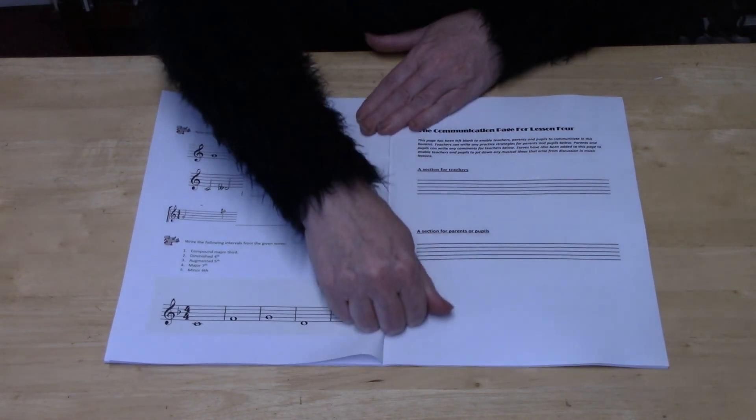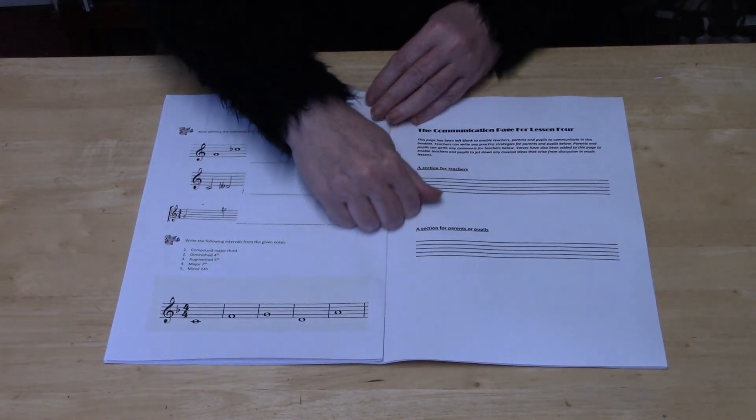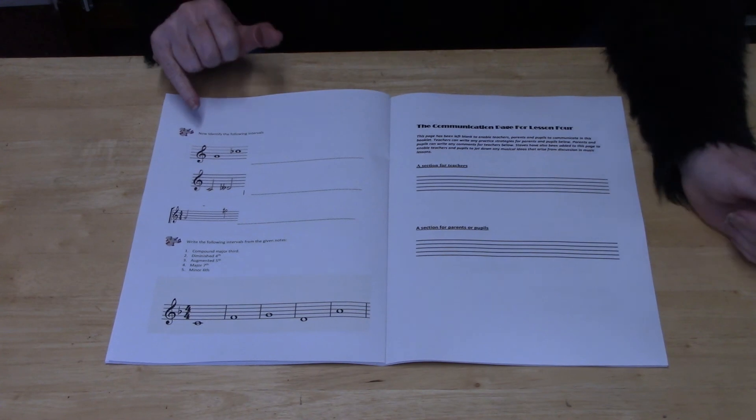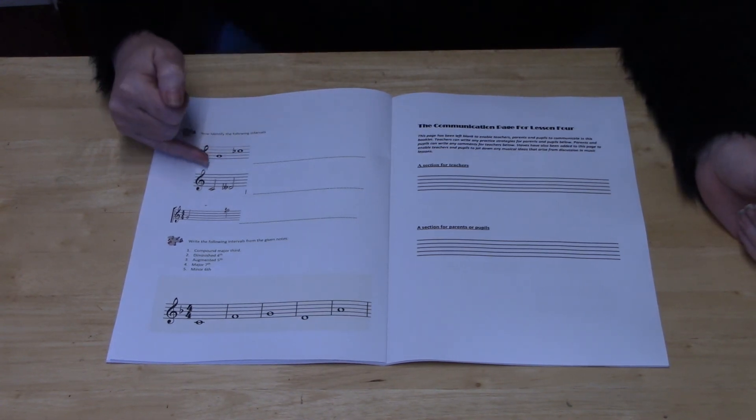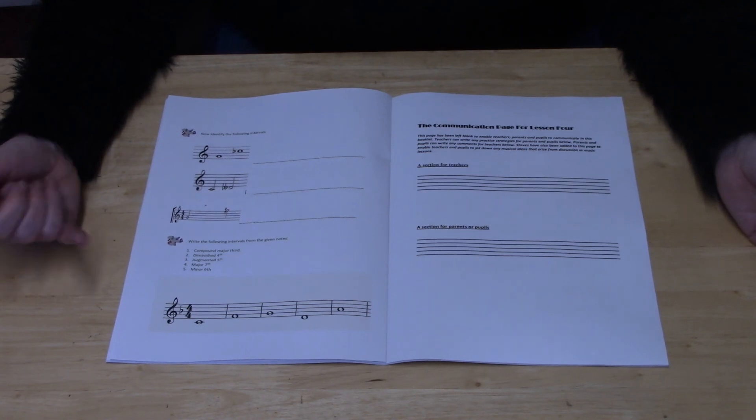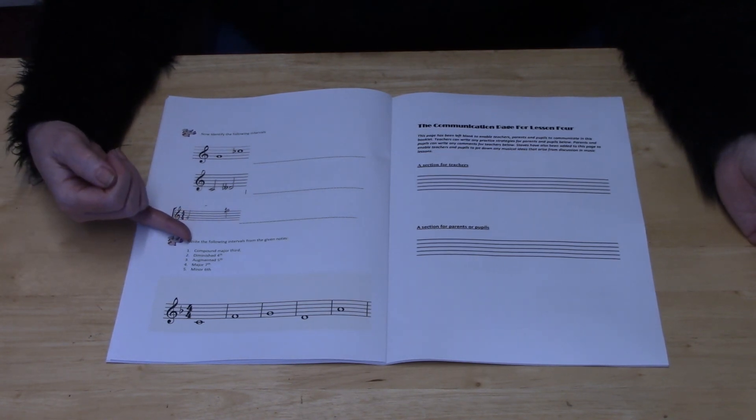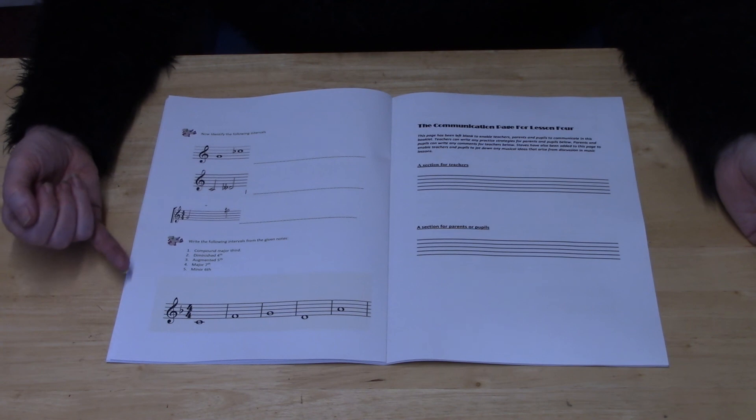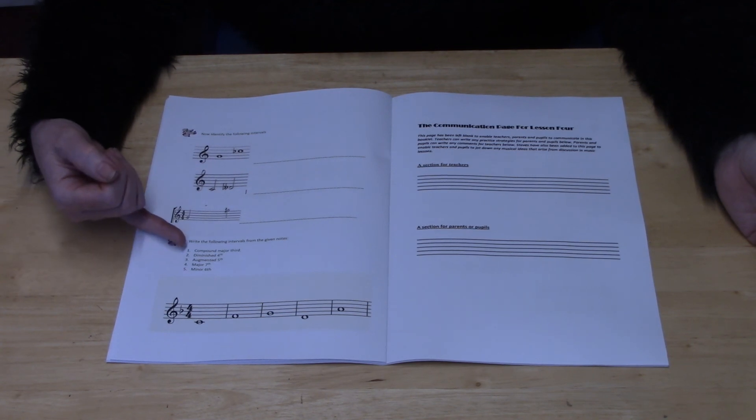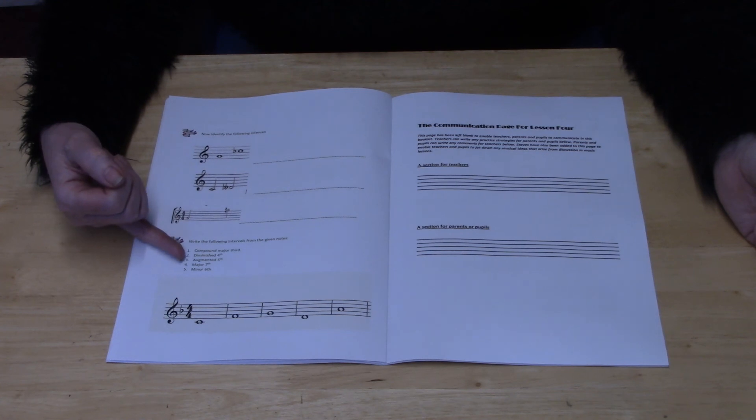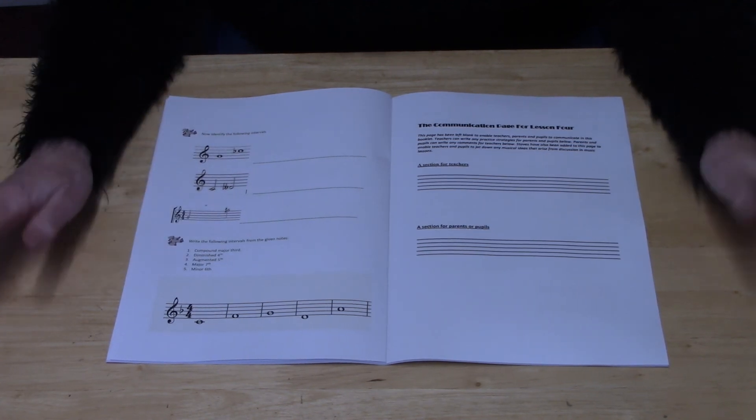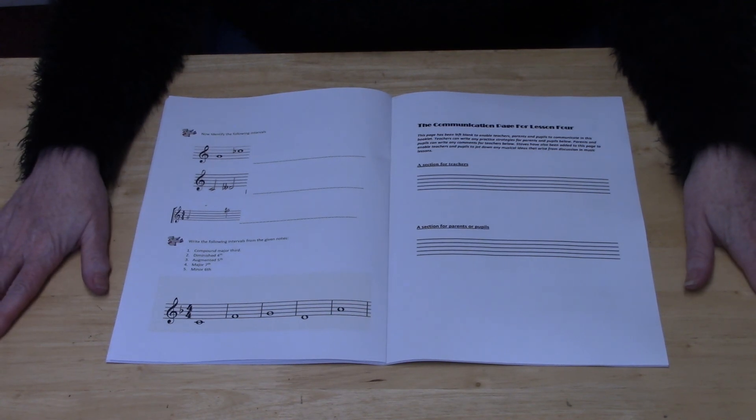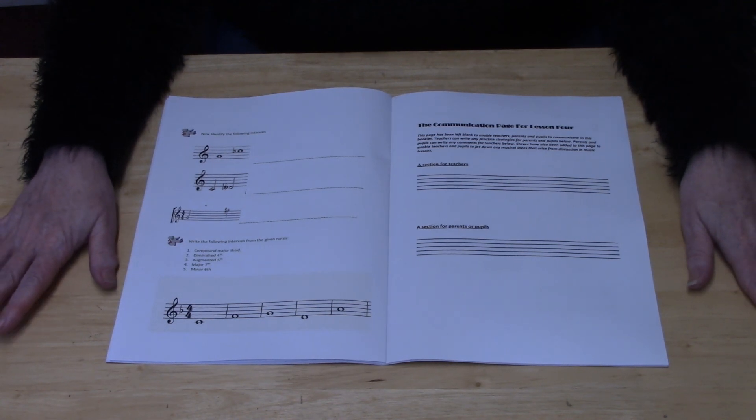Then you move into the tasks to finish this lesson four off. It says first of all, identify the following intervals which is shown in the book here. Then it says write the following intervals from the given notes. You have to write a compound major third, diminished fourth, augmented fifth, a major second, seventh, and a minor sixth. And that completes lesson four.